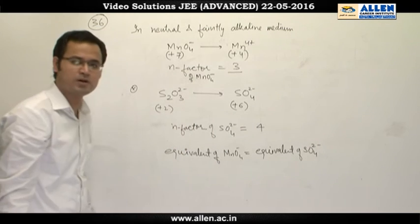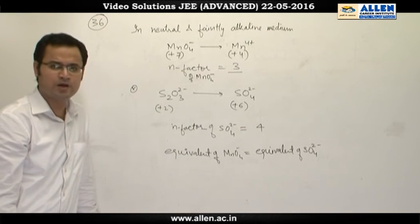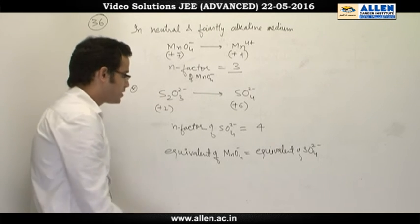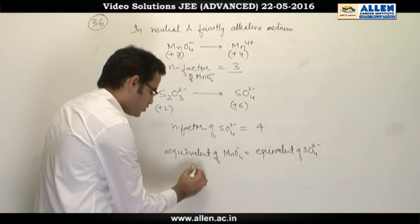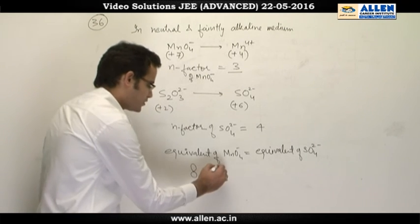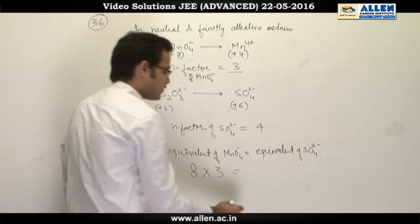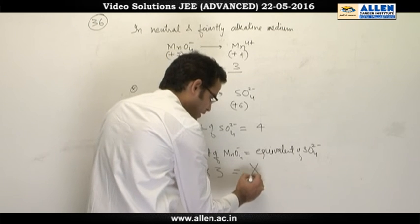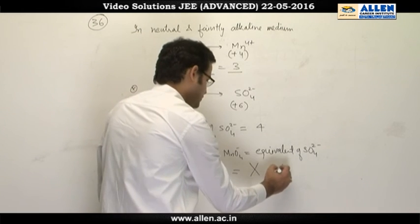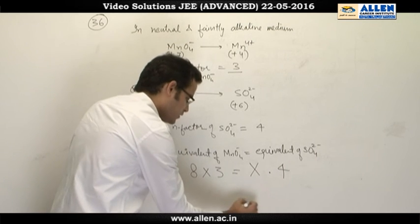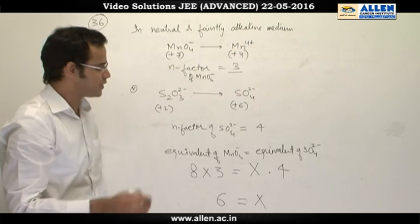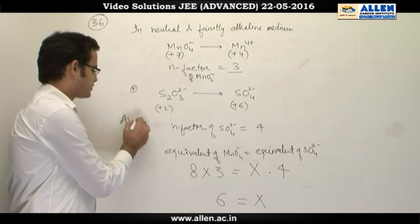KMnO4 and sulfate anion equivalents are equal. KMnO4 moles consumed is 8 multiplied by n-factor which is 3 equals to moles of sulfate anion which is X multiplied by n-factor of sulfate anion which is 4. On solving this, we get X equals to 6. Therefore, the correct answer is 6.